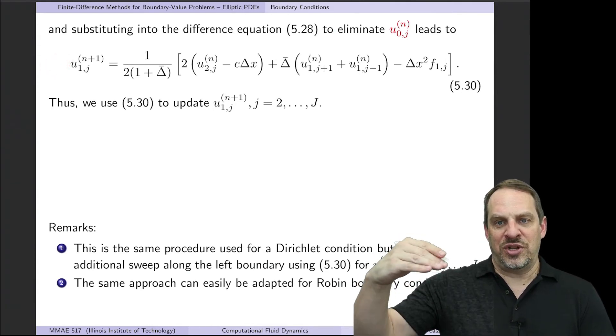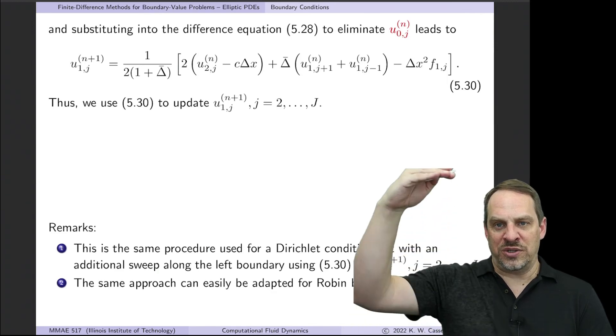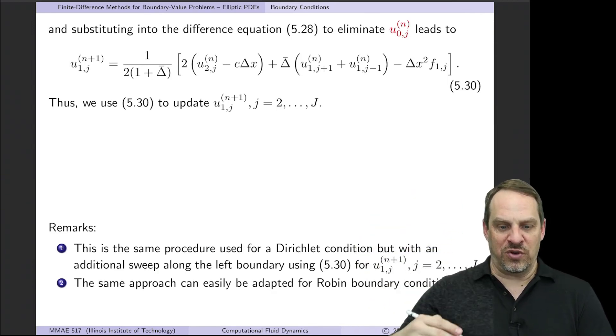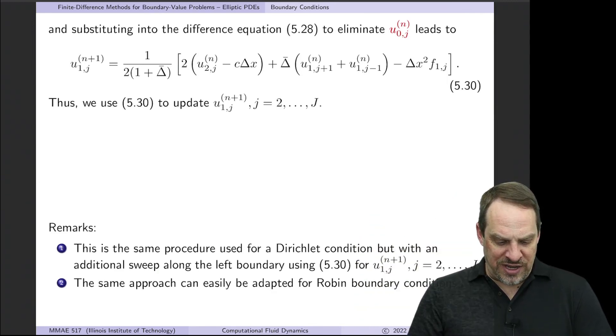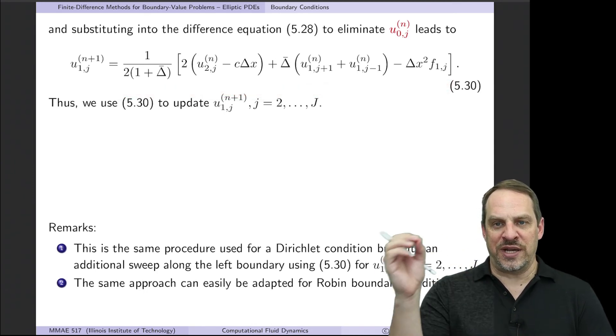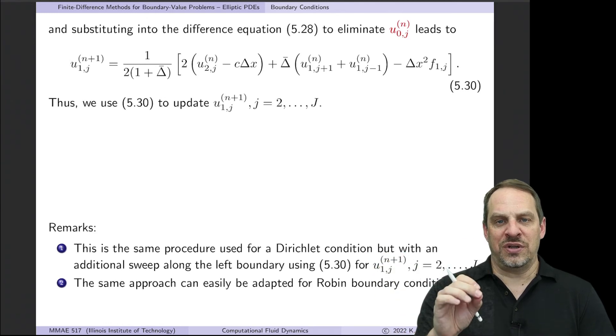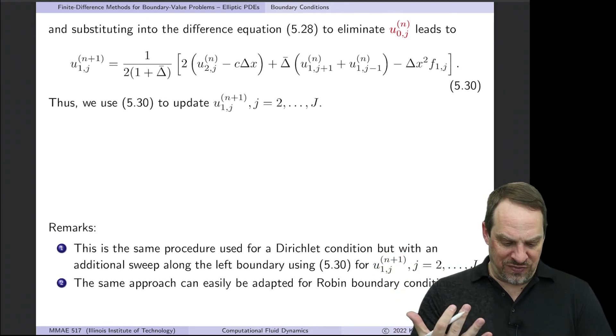So we're going to increment through the J's where the I is equal to one. So this is along the left boundary for all J. And we now have an expression where we know everything on the right hand side. We've eliminated the point outside the domain. So we know everything on the right hand side and we can evaluate that.